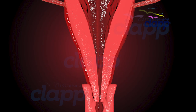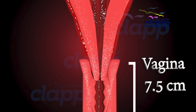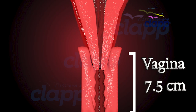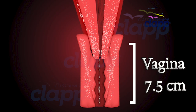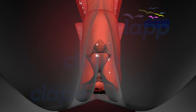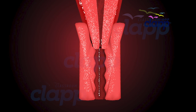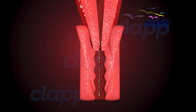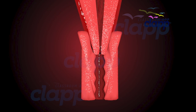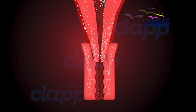Vagina is an elastic muscular tube, about 7.5 centimeters long, that connects the cervix of the uterus to the exterior of the body by the vaginal opening. The cervical canal along with the vagina forms the birth canal.